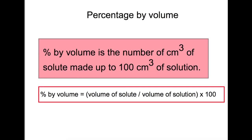Let's now look at percentage by volume. This is the number of centimeters cubed of solute required to make up 100 centimeters cubed of solution. The equation is: percentage by volume equals the volume of the solute divided by the total volume of solution — that's the total volume, not just the water — all times 100, because your solute this time is a liquid.